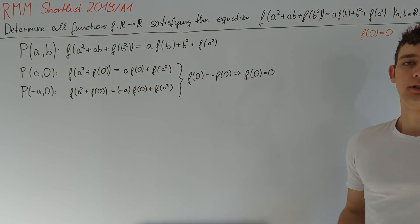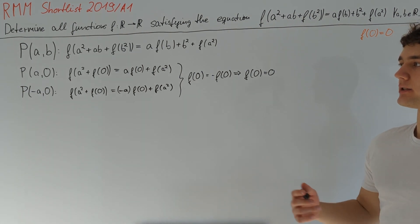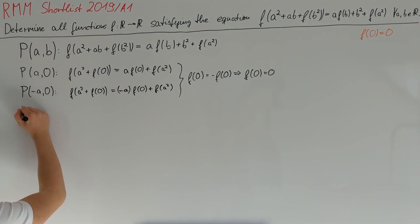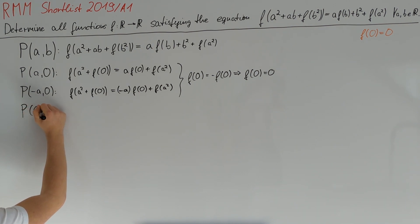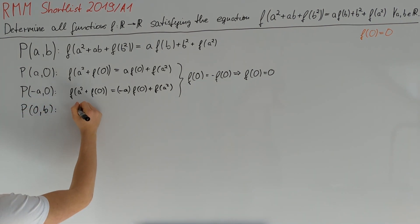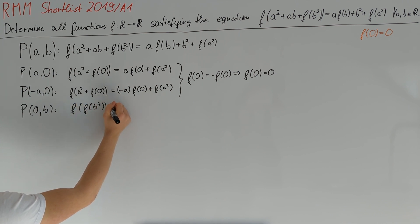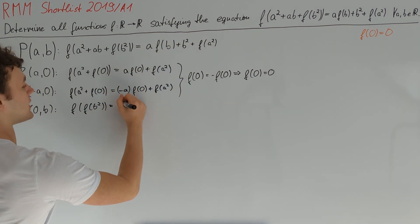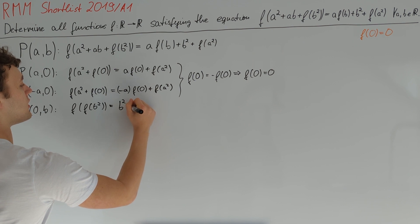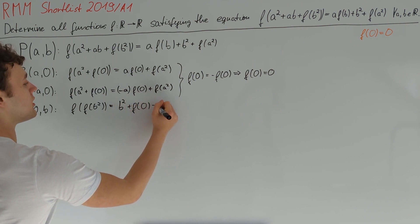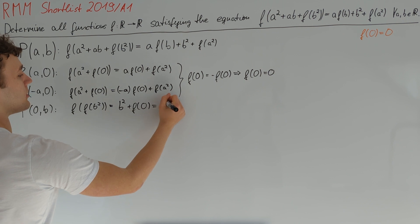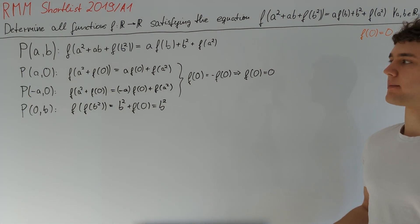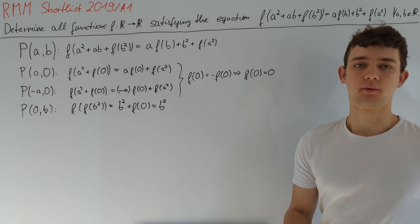Setting a equal to 0, P(0, b) tells us that f(f(b²)) equals 0·f(b) + b² + f(0), which we now know equals b². We've gotten this initial step out of the way that we always want to do when confronted with such a functional equation on the real numbers.